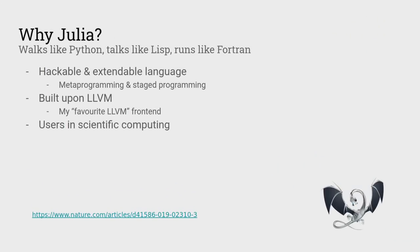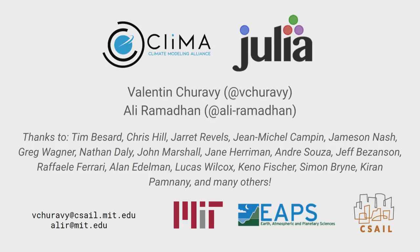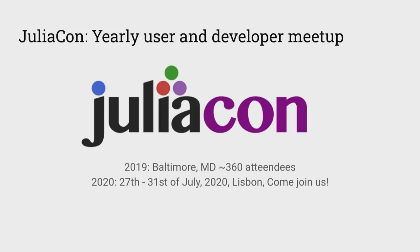Julia has users in scientific computing, and in a prior life I was doing a lot of scientific computing in cognitive science writing models. I care about these users because I've seen how hard it can be to make progress when the tools you have are bad. My personal goal is to enable scientists and engineers to collaborate efficiently and actually make change. Julia and the Klima project are big projects with many people to thank. I'd like to extend an invitation: there's JuliaCon every year — a developer meetup. Last year we were about 360 people. Next year it will be in Lisbon, so come join us if you're interested in meeting scientists with interesting problems who are looking for solutions.